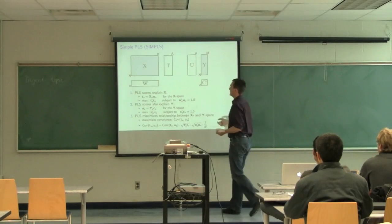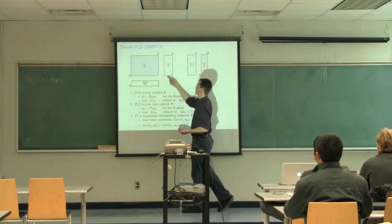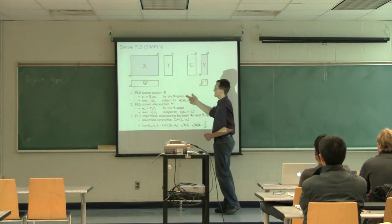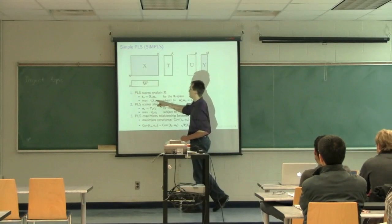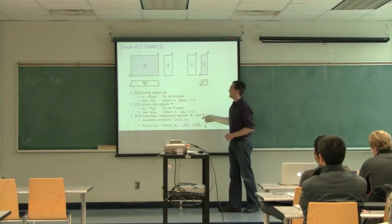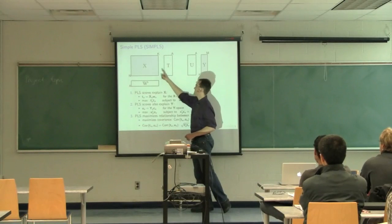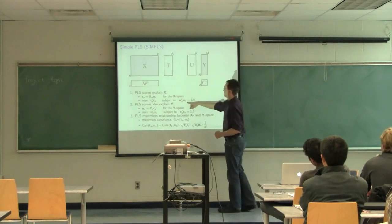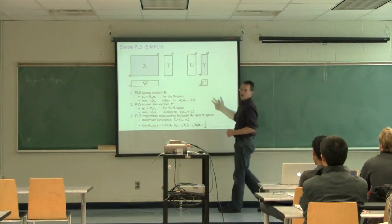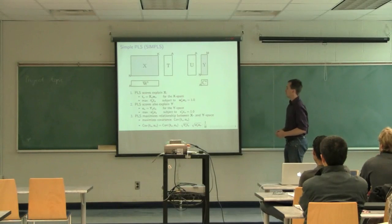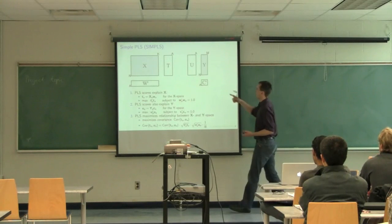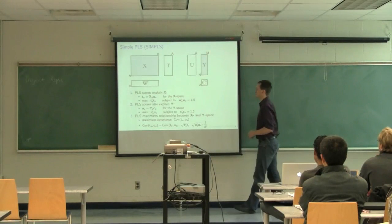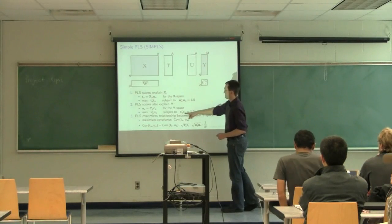What PLS is doing is it's trying to explain the X matrix using the scores T. You could look at the PLS algorithm as trying to maximize T-transpose-T — in other words, the variance explained in those scores T, the variance coming from the X matrix. We've also got the Y space, which is being explained. We're trying to maximize how well we can explain the Y space with U-transpose-U, which are the projections onto the loadings for the Y space, C.